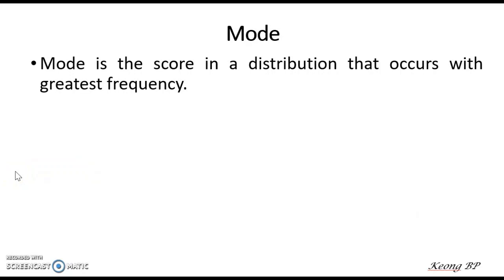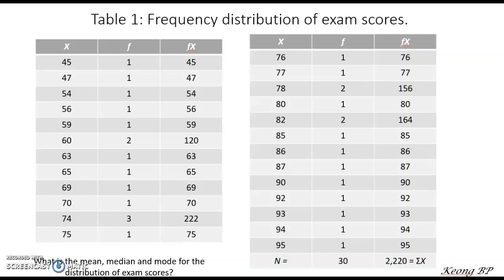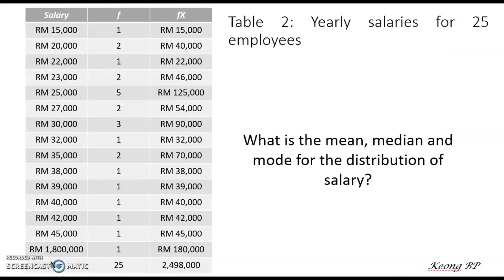Now let us look at two examples. The first example: Table 1 shows the frequency distribution of exam scores for 30 students. Using the conventional way, try to calculate the value of mean, median, and mode for the distribution of exam scores. You can pause the video while doing the calculation. Table 2 shows the yearly salaries for 25 employees in a certain company. Using the conventional way, try to calculate the mean, median, and mode for the distribution of salary for these 25 employees.